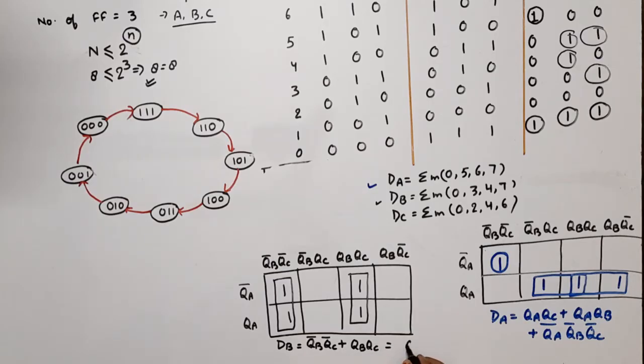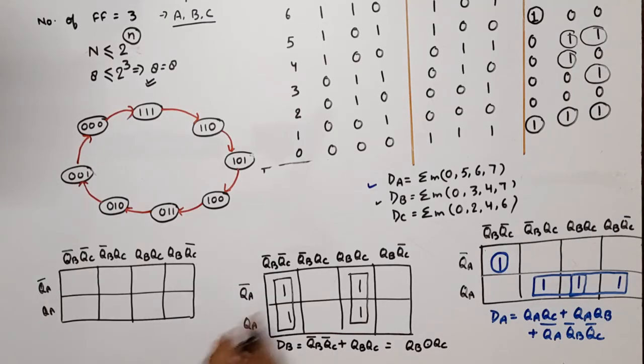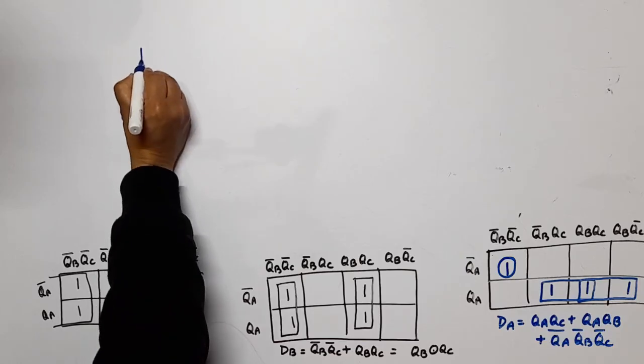Now we draw K-map for dC. Now for dC: 0, 2, 4, and 6. Now in this case, back-to-back one quad is possible. So for dC is equal to from these two rows QC bar is common. So these are the equations. Now let's draw the circuit. Three flip-flops.